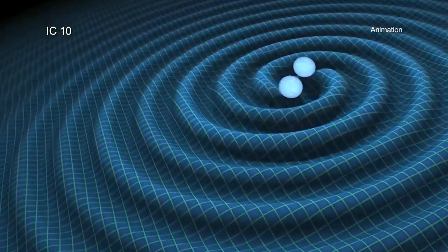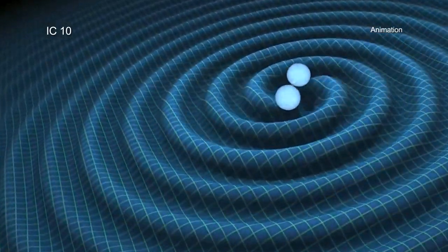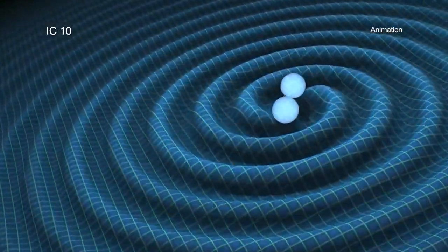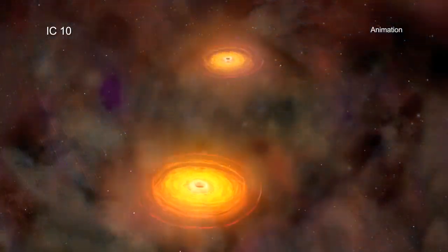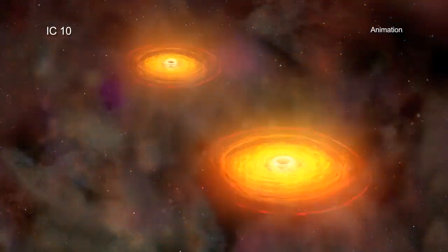If the separation between the compact objects becomes small enough as time passes, they will produce gravitational waves. Over time, the size of their orbit will shrink until they merge.